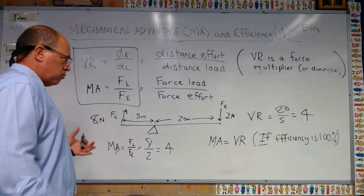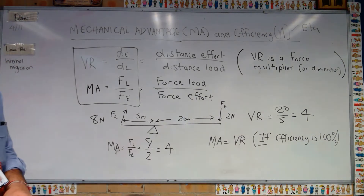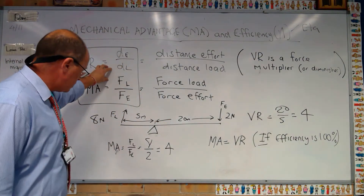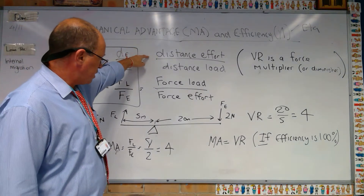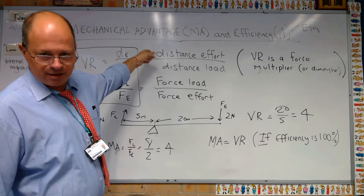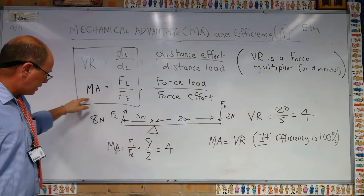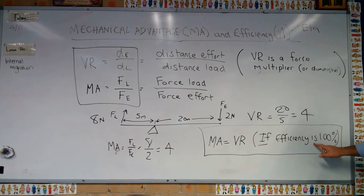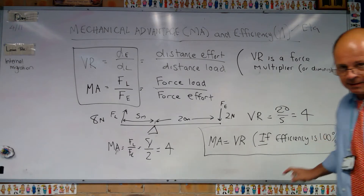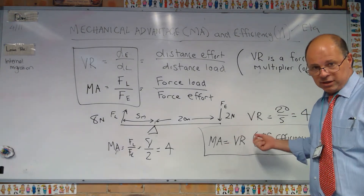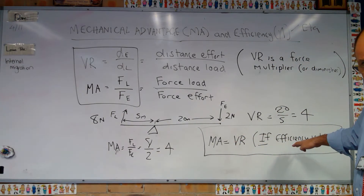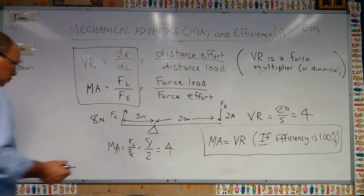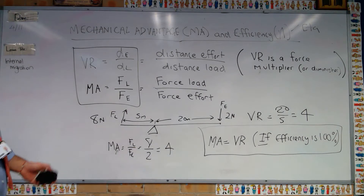Now you might be asking: what are the equations for efficiency? Pause the video and write down this information. Velocity ratio is the speed of the effort arm over the speed of the load arm, done as distances because time cancels out. MA equals VR if and only if efficiency is 100%, and many exam questions will give you 100% efficiency and ask you to calculate MA or VR.